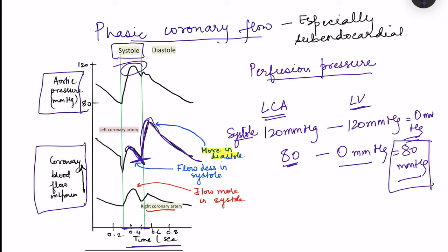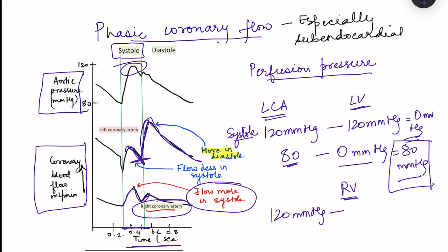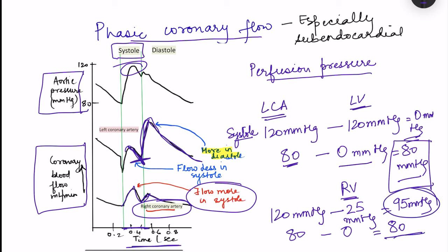The right coronary artery behaves differently — flow is more during systole than diastole. The right coronary artery also arises from the aorta (pushing pressure 120 mmHg), but maximum right ventricular pressure during systole is only 25 mmHg, giving a perfusion pressure of 95 mmHg. During diastole, aortic pressure is 80 mmHg and right ventricular pressure is 0 mmHg, so perfusion pressure is 80 mmHg. Therefore, perfusion pressure is greater during systole for the right coronary artery, explaining higher systolic flow.